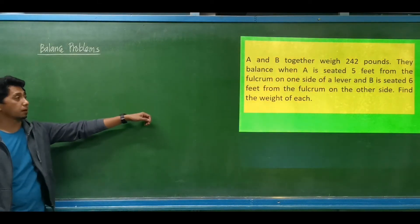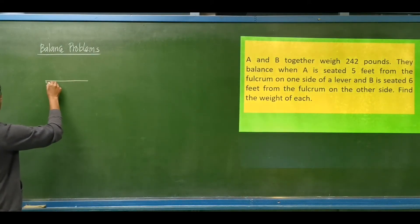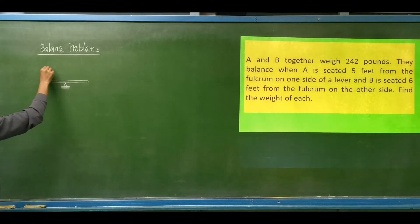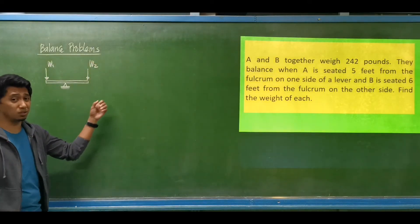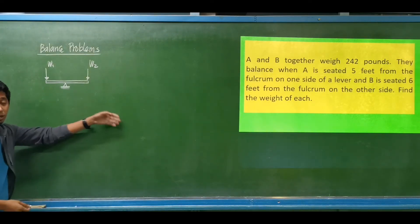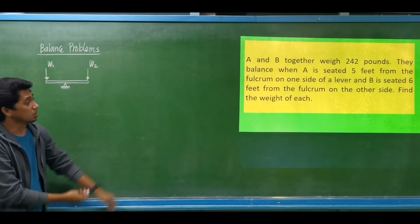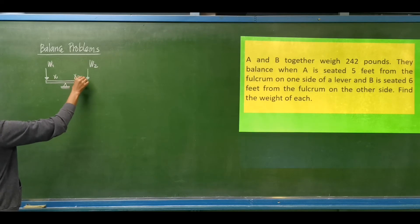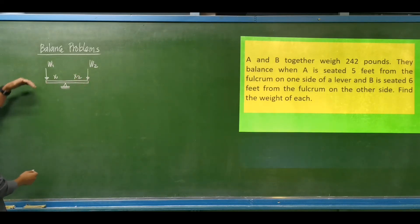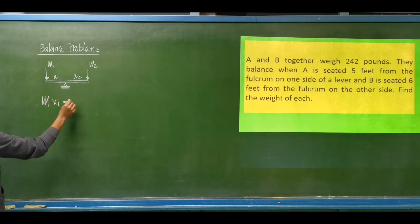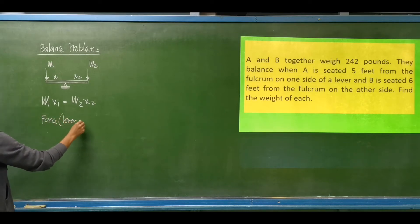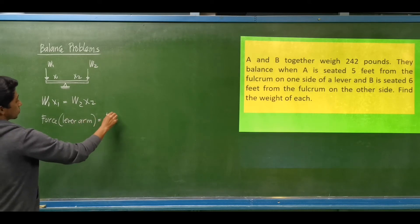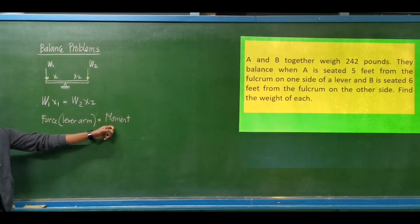Now let's move to balance problems. For a lever with a fulcrum, weight 1 is at distance x1 and weight 2 is at distance x2. For the lever to be horizontal and balanced, weight 1 times x1 must equal weight 2 times x2. The product of force times lever arm is called a moment.